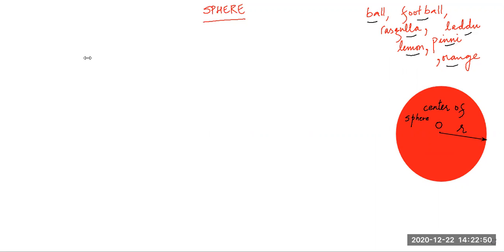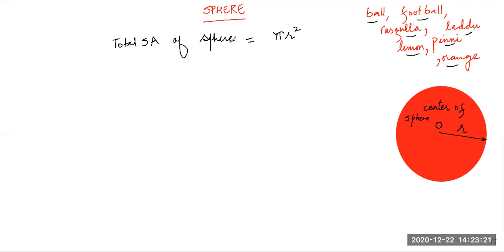Some people say Earth is a sphere, but it is flattened at its poles. Now, what is the total surface area of a sphere? To remember it: if you have an equivalent circle of the same radius r, that circle has area πr². The corresponding sphere having the same radius has four times the surface area of that circle. So the total surface area of a sphere is 4πr².